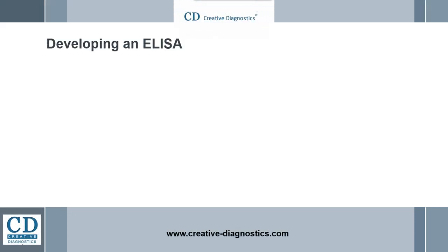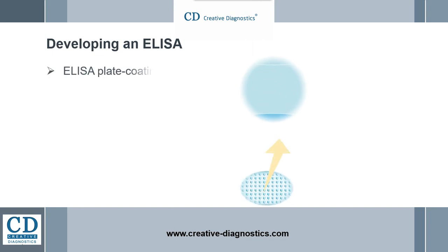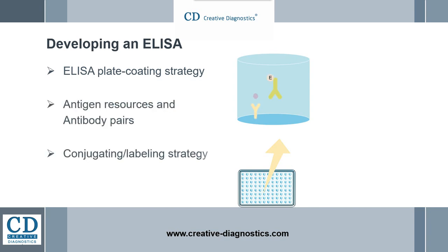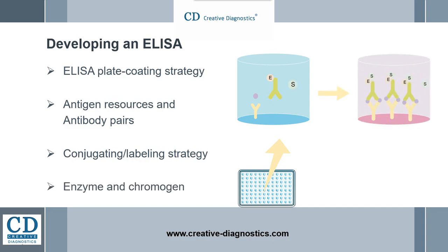An ELISA system consists of four technical elements: 1. ELISA Plate Coding Strategy, 2. Antigen Resources and Antibody Pairs, 3. Conjugating or Labeling Strategy, 4. Enzyme and Chromogen.